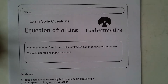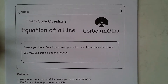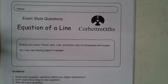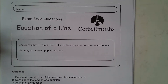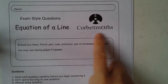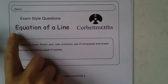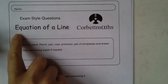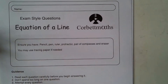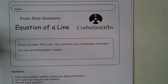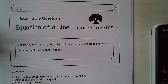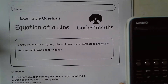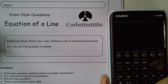Hi everyone, this is another video on how to use your Casio FX CG50. In this one I'm going to be using the Corbett Maths booklet called Equation of a Line, and we're going to use it in a slightly different way to what we've been using it for most of the other ones, which is generally solving equations.